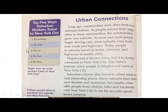So there are so many ways that people can travel from Maplewood all the way to New York City. The title of this paragraph is 'Urban Connections.' We're going to connect suburbs with the urban communities in this paragraph. You can see that the opening sentence is explaining how these communities were formed.